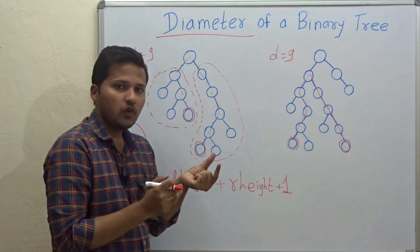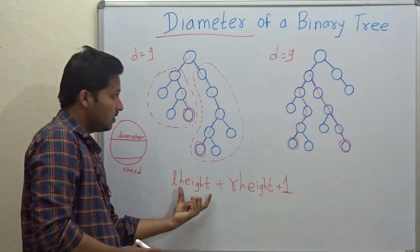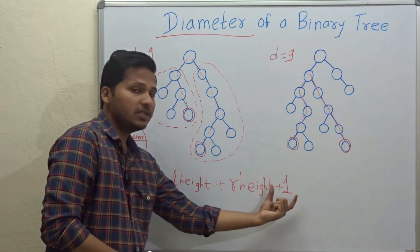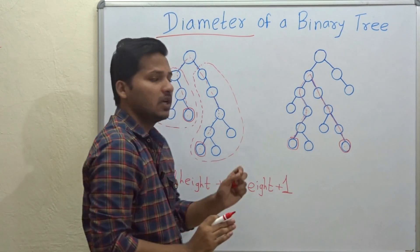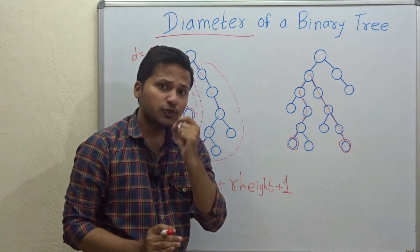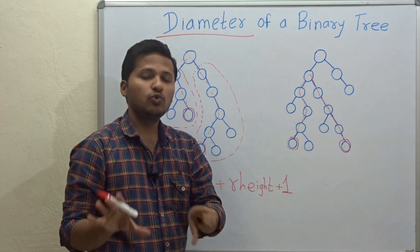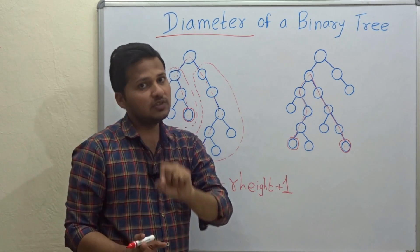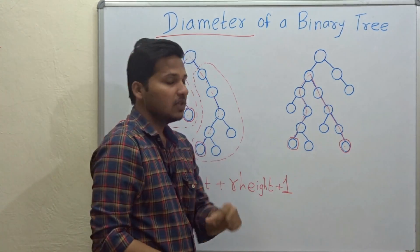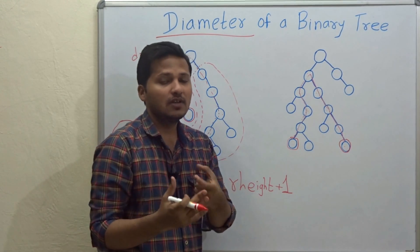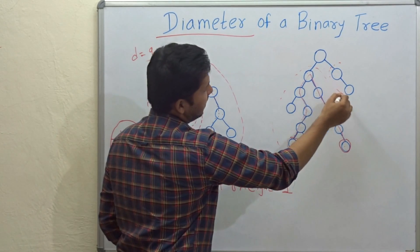Here is our solution for the recursive core — how does this solution work? For this example, the diameter is equal to left height plus right height plus 1. Now, just assume that you know the diameter of this binary tree does not pass through the root. Then, if the diameter does not pass through the root, we have to find out the diameter path either on the left subtree or the right subtree.